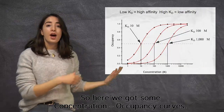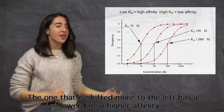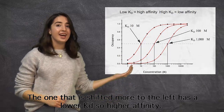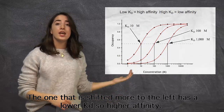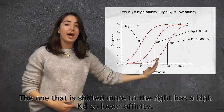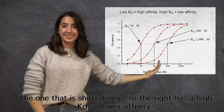Here we have some concentration-occupancy curves. The curve shifted more to the left has a lower KD, meaning high affinity, and the curve shifted more to the right has a high KD, meaning lower affinity.